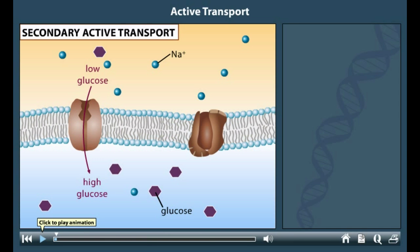In secondary active transport, a substance such as glucose is pumped from a region of lower concentration to a region of higher concentration. This process requires energy because glucose molecules are transported against their concentration gradient.